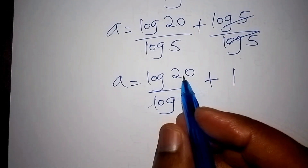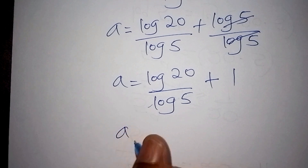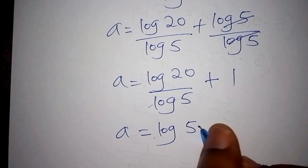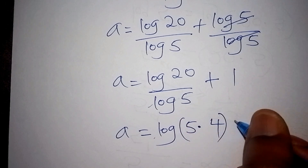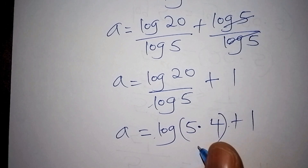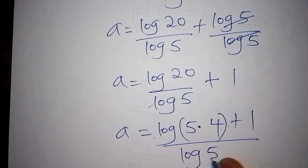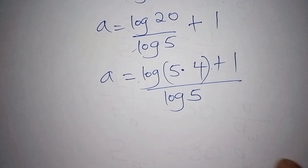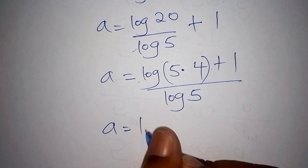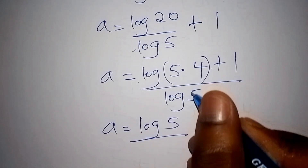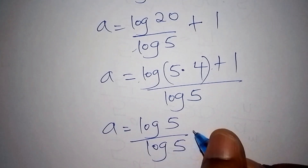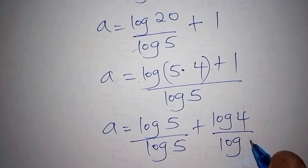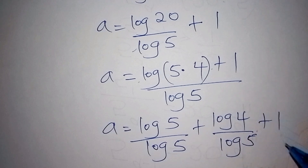We can further factorize log of 20 by noting that 20 equals 5 times 4. So a equals log of 5 times 4, all over log of 5, plus 1. Applying the product rule again, this becomes log of 5 over log of 5, plus log of 4 over log of 5, plus 1.